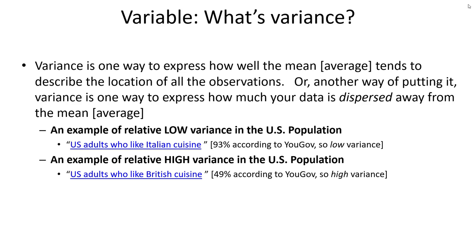On the other hand, only 49% of adults report that they like British cuisine. This is an example of a relatively high variance situation due to the polarization — quite a few people seem to like it, and in almost equal proportion, seem to not.